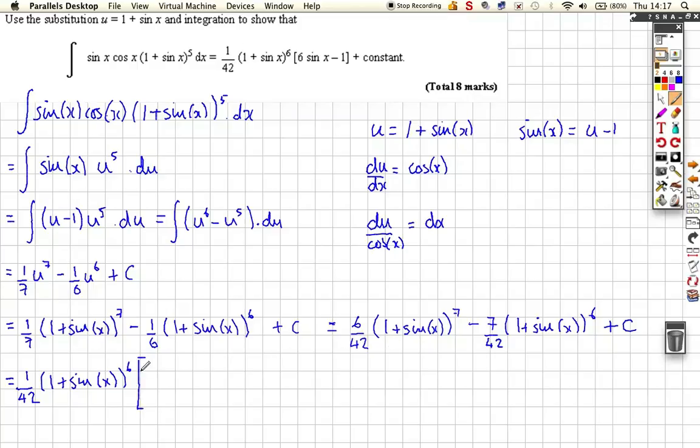And then that means we get 6 lots of 1 plus sine x inside the bracket minus 7 because we've taken out that whole factor there. And we're almost there then. We're almost there. So that means, well, we just multiply this bracket out. We've got 6 plus 6 sine x minus 7.